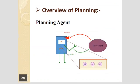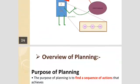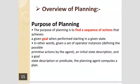Overview of planning: the planning agent. In an artificial intelligence robot, the sensors sense the environment and according to that, the agent's actuators work on that particular condition. The purpose of planning is to find a sequence of actions that achieve a given goal when performed starting in a given state. In other words, given a set of operator instances defining the possible primitive actions by the agent, an initial state description, and a goal state descriptor or predicate, the planning agent computes a plan.